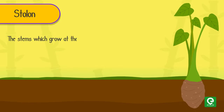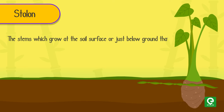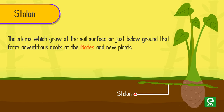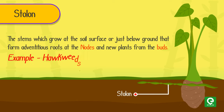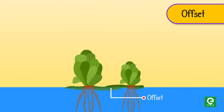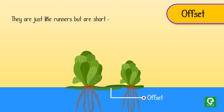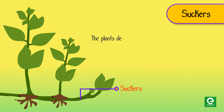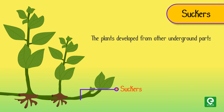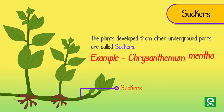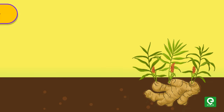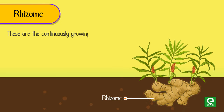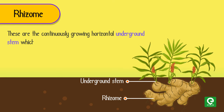Stolon: stems which grow at the soil surface or just below ground, forming adventitious roots at the nodes and new plants from the buds. Example: hawkweeds. Offset: just like runners but shorter and thicker, found in aquatic plants. Examples: Eichhornia crassipes and Pistia stratiotes. Suckers: plants developed from other underground parts are called suckers. Example: chrysanthemum and Mentha.